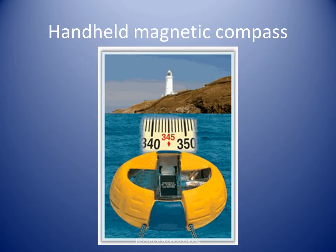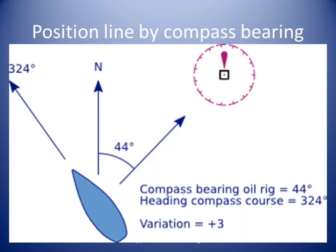Another type of position line is the compass bearing. This is similar to a transit, but one of the in-line objects is the compass itself with its graduated compass card. Here we see a boat on a northwestern heading, and she uses the compass to take a bearing of an oil rig. If the oil rig is on the nautical chart, the navigator has a position line.